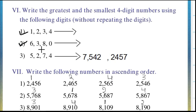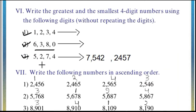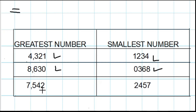Second question uses digits 6, 3, 8, 0. The greatest number starts from the greatest digit: 8630 — eight thousand six hundred and thirty. The smallest number starts from the smallest digit: 0368 — three hundred and sixty-eight. Third question uses digits 5, 2, 7, 4. The greatest is 7542 and the smallest is 2457.